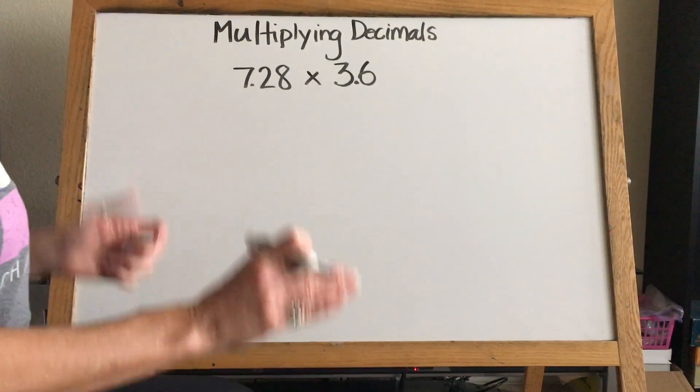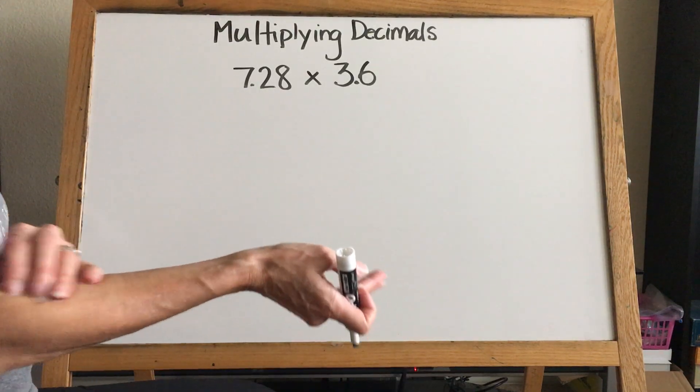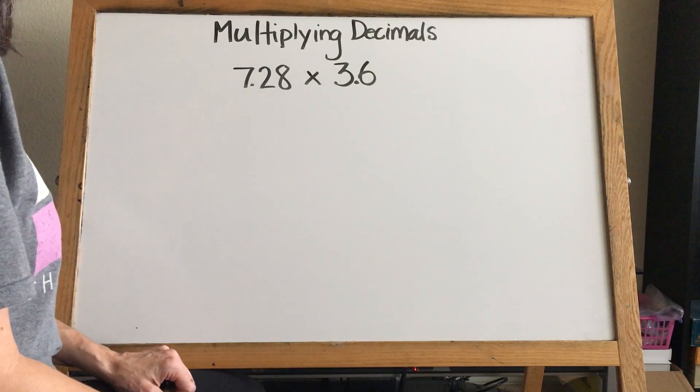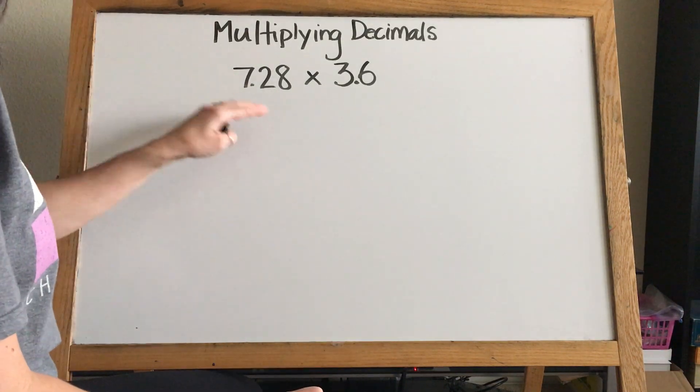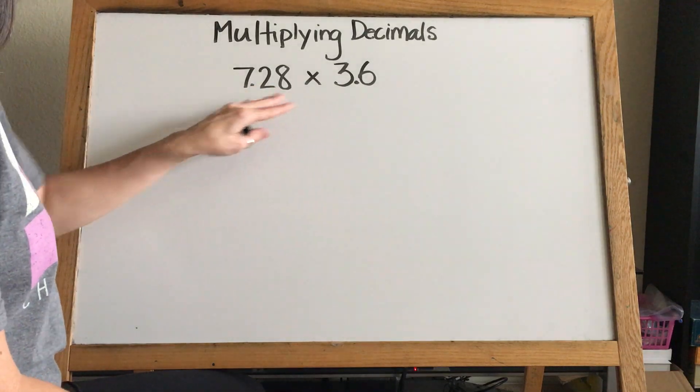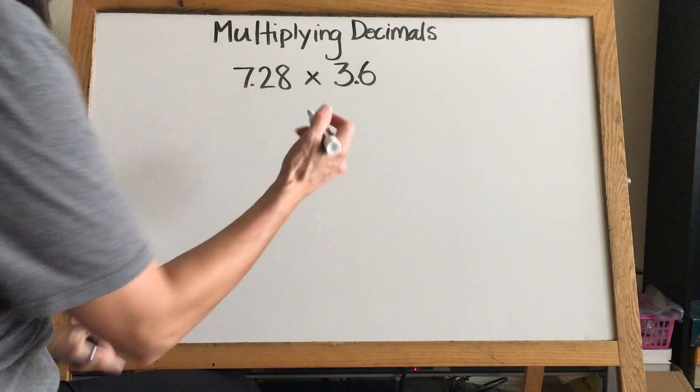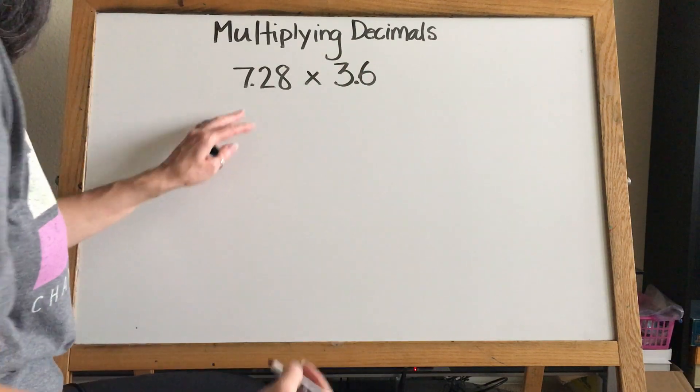The great thing about multiplying by decimals is it's exactly the same as multiplying whole numbers. Nothing changes except for where the decimal is in your answer. There's going to be a decimal in our answer. We look at our numbers - this has three digits, this has two digits. We always want to put the number with the most digits on the top, even if it's smaller or bigger.